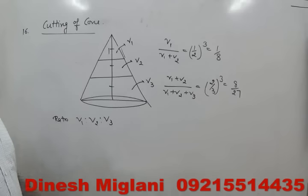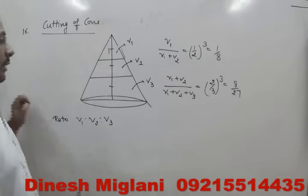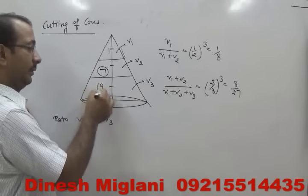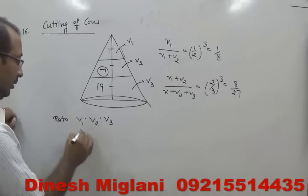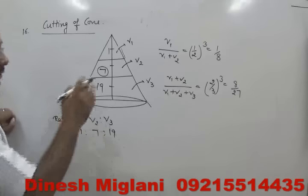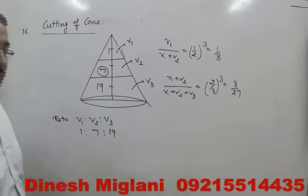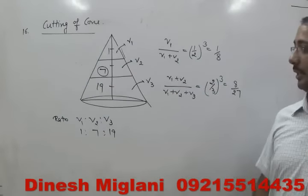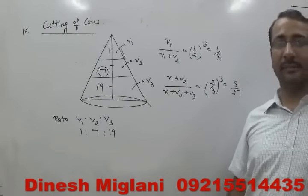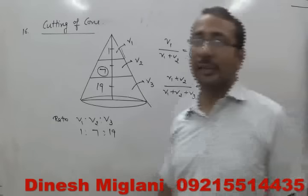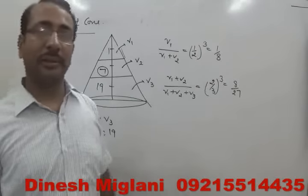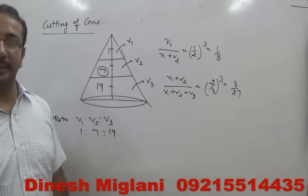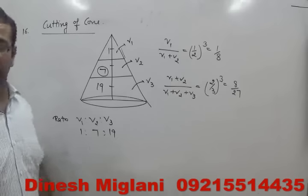If V1 is 1 and V1 + V2 is 8, then V2 is 7. Total is 27, so V3 is 19. The ratio of the volumes of the three sections is 1 : 7 : 19. Whenever talking about volumes, you simply cube the ratio of heights to get your answer.